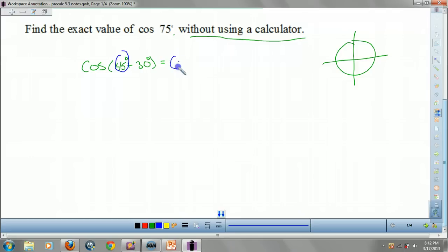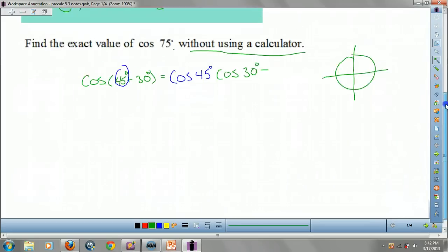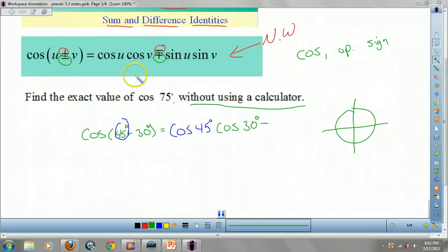So now I'm going to use my rule. I'm going to do cosine of 45 times cosine of 30. Now, looky, guys. Since this is an addition here, I use subtraction minus. Again, our rule's right up here. So if this is my u, that's my v. U, V. Catching some UV rays.